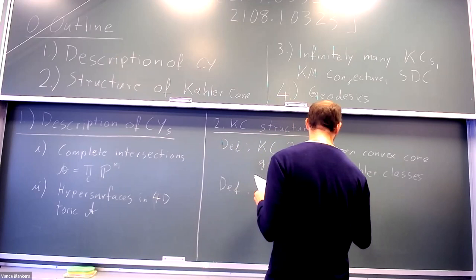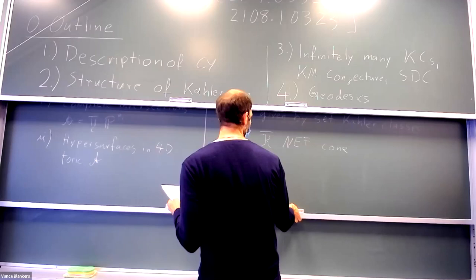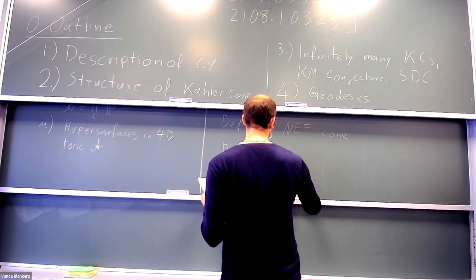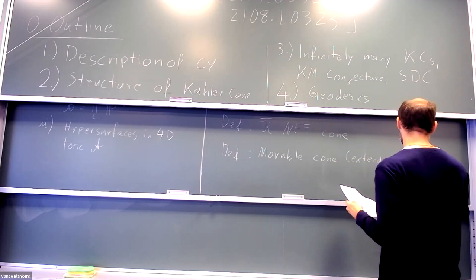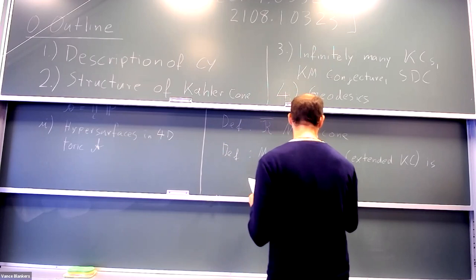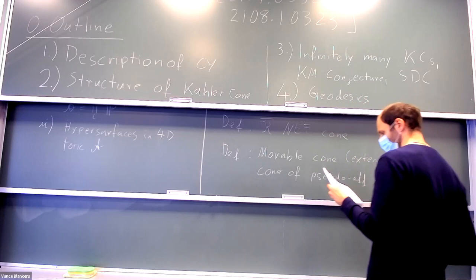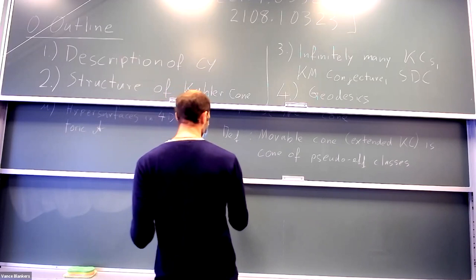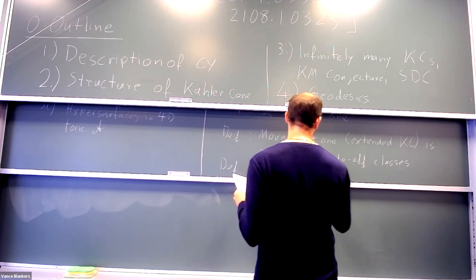We also need a movable cone — that's called the extended Kähler cone. Another cone we will be looking at is the effective cone, which is the cone that generates divisor-effective divisors.